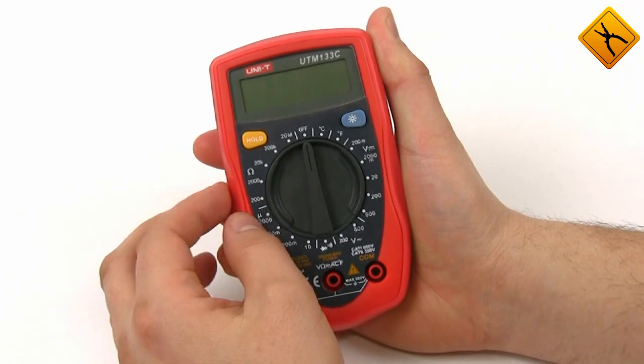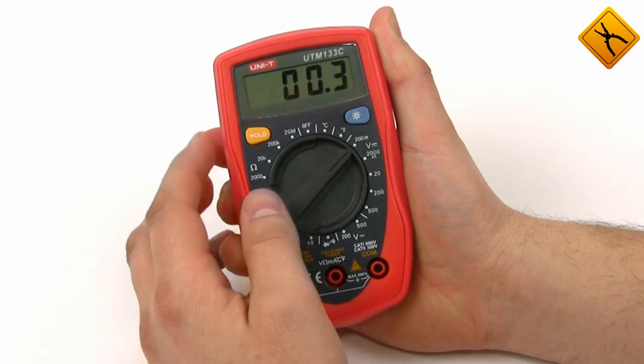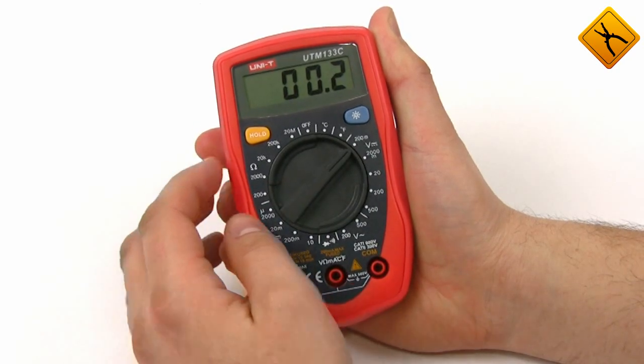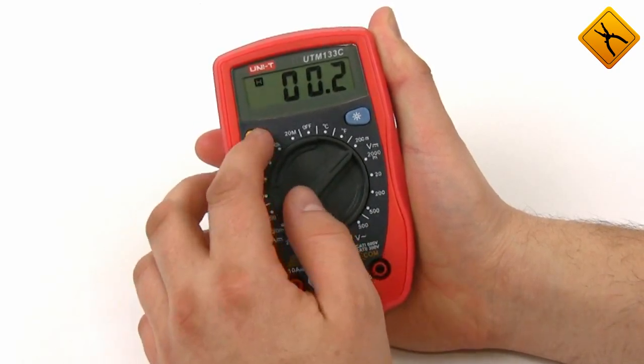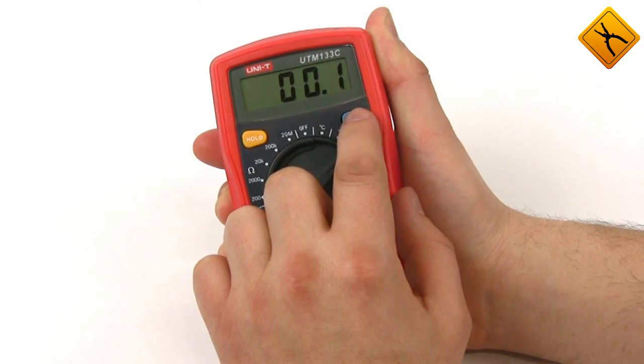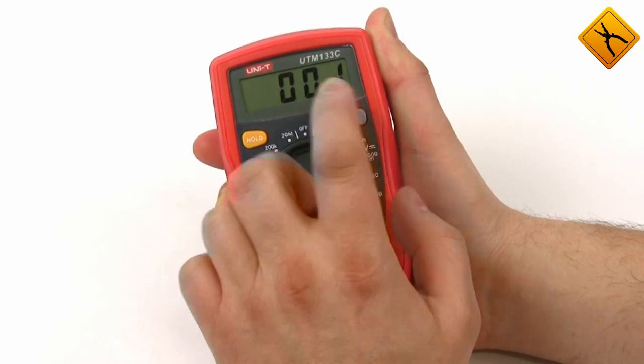There is a display on the front panel. The maximum is 1999 counts. There is also a data hold button as well as a display backlight button. The backlight is green, it is invisible in the daylight.